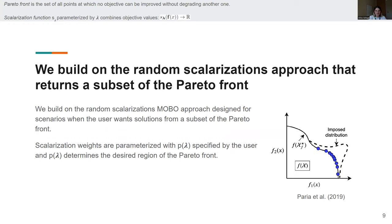So a scalarization function as lambda is parameterized by weights lambda and combines objective values at every location x into a single scalar. And so what this approach does is it defines a prior over the scalarization weights p of lambda that is specified by the user and determines the desired region of the Pareto front.